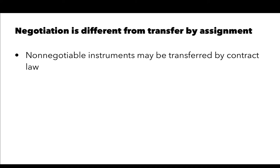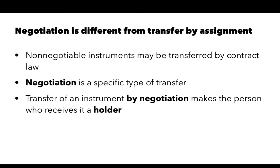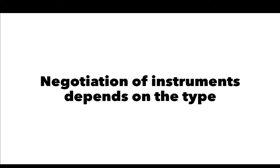Negotiation is different. Negotiation involves transfer not by contract law, but by negotiation. Non-negotiable instruments can be transferred by contract law, but negotiation is a specific type of transfer that only occurs with instruments that are negotiable — that meet the standards set out previously. Transfer of an instrument by negotiation makes the person who receives it a holder. The method used depends on whether the instrument is an order instrument or a bearer instrument.